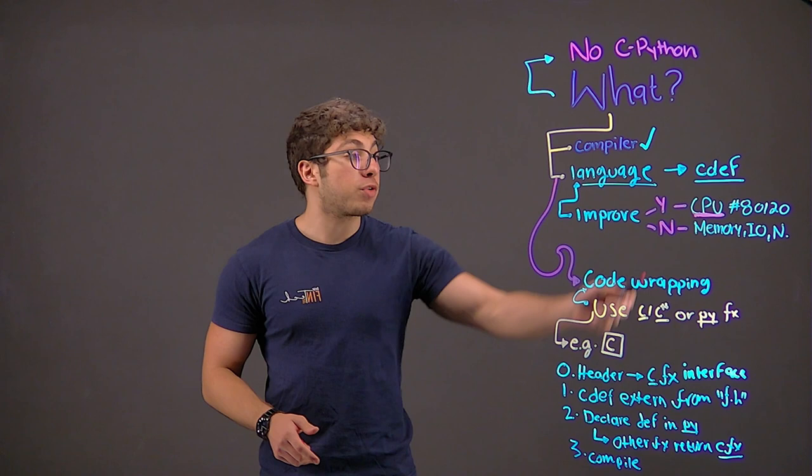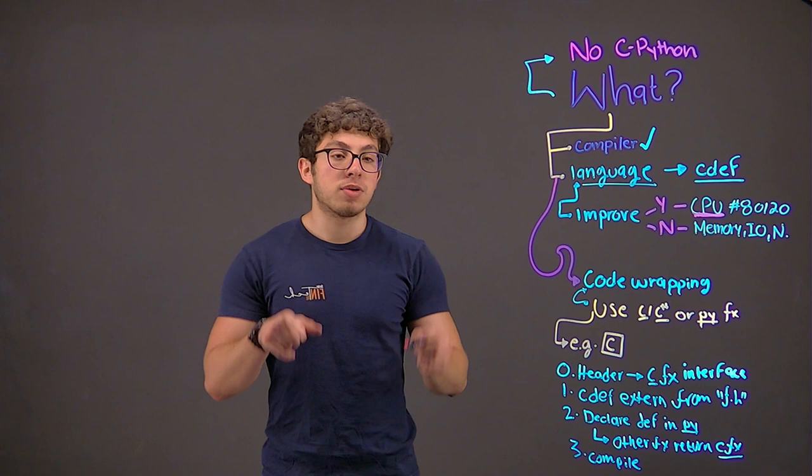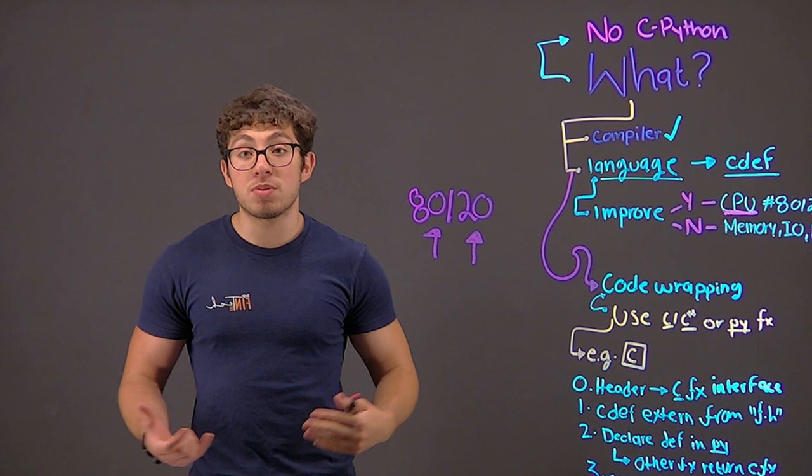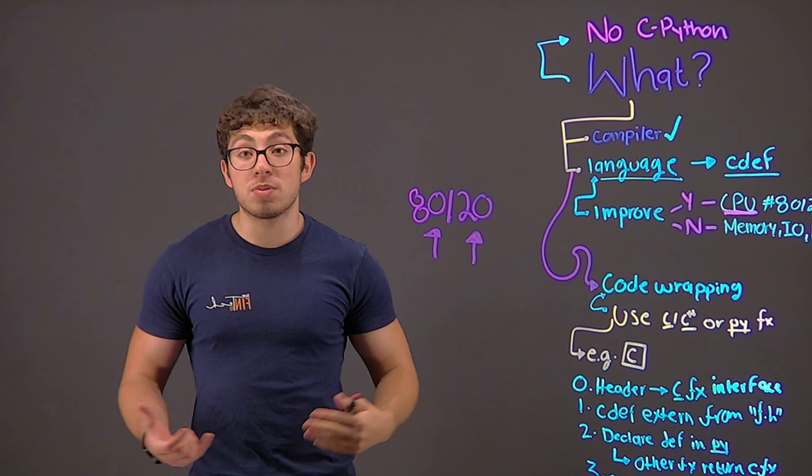Scython code helps improve your Python code when you have CPU bound operations. But remember the Pareto principle, 80-20 rule. 80% of efficiency is due to 20% of the code. So just optimize the things that need to be optimized. At the end, 20% of your code will give 80% of efficiency.